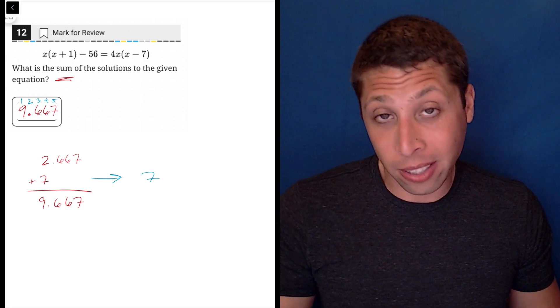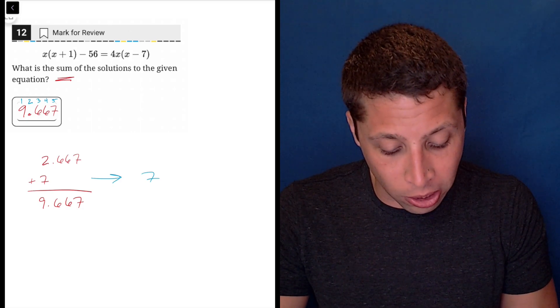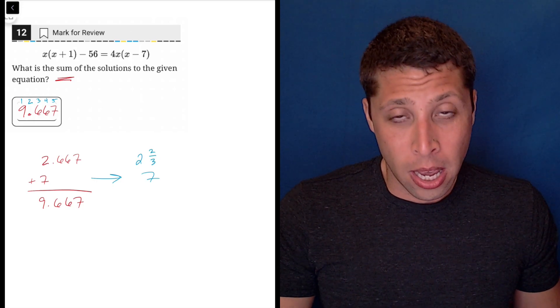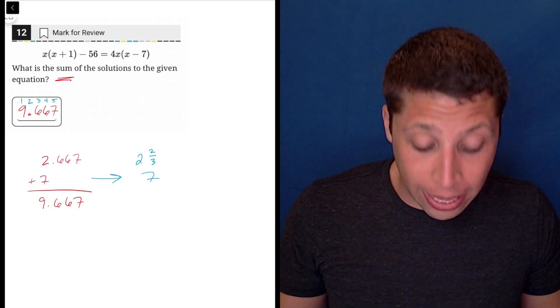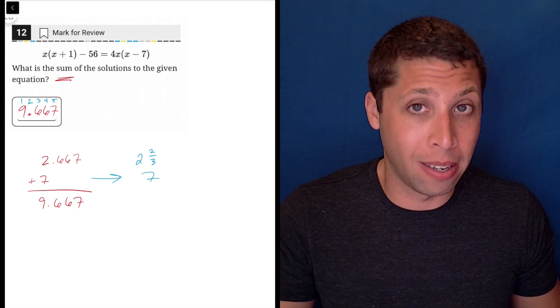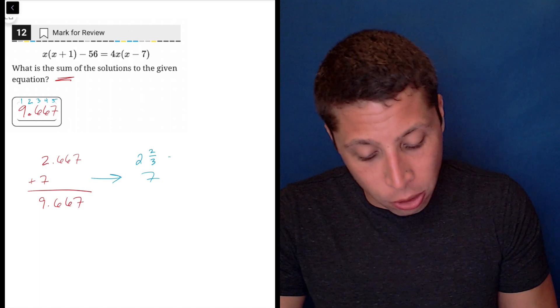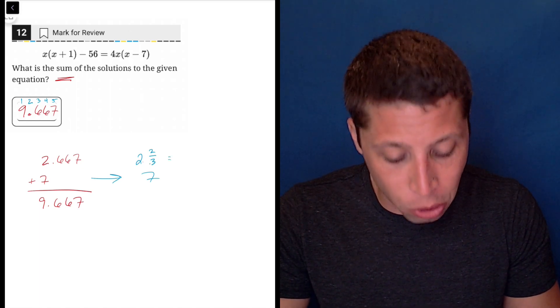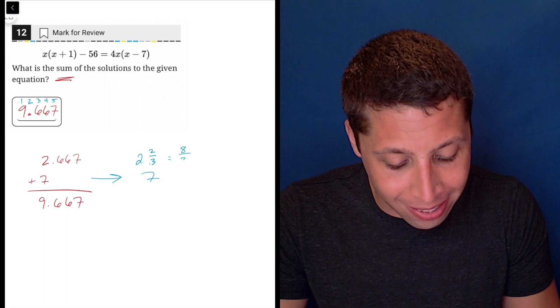The 2.667, my brain instantly is just like, okay, that's two and two thirds. And so this calculator that I have allows me to enter stuff like that, but I can't enter that into the student produced responses. So I have to convert this into an improper fraction. So two and two thirds would be, you do three times two is six plus two is eight, so that's eight thirds.